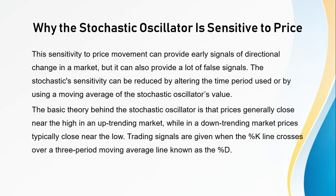The stochastic oscillator's sensitivity to price movement can provide early signals of directional change in a market, but it can also provide a lot of false signals. This sensitivity can be reduced by altering the time period used or by using a moving average of the stochastic oscillator's value. The basic theory is that prices generally close near the high in an uptrending market, while in a downtrending market prices typically close near the low.